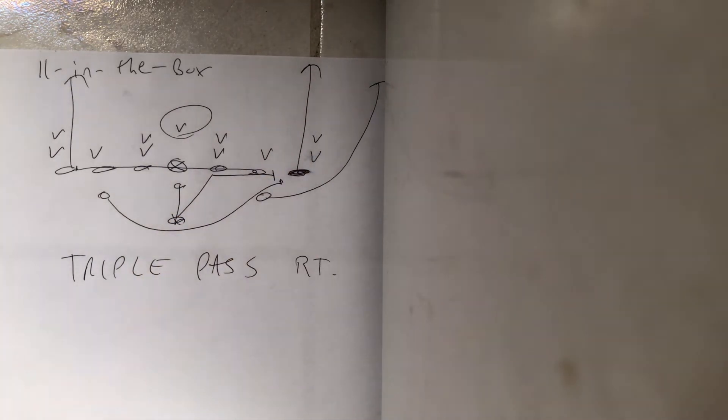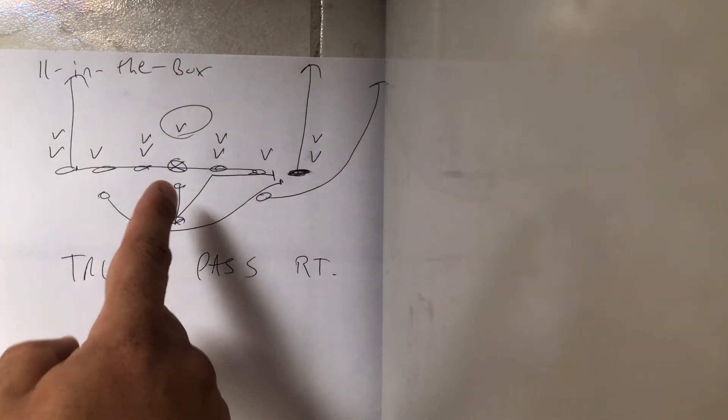Quarterback's going to five-step drop. Now, it's interesting this year because Navy isn't ball faking second year in a row. Army has gone back to ball faking, but it's a very weak fake. So I don't know, you do you, but anyway, we'll go with the Navy way. Five-step drop.